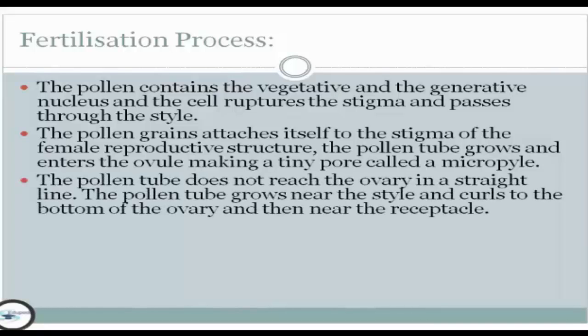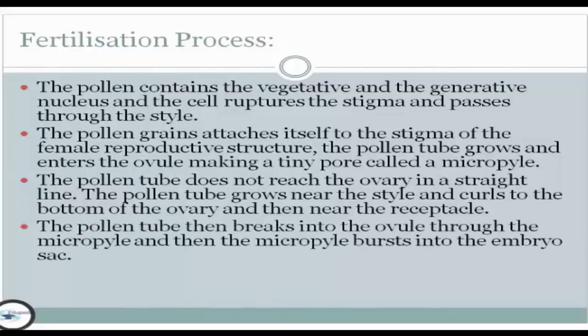The pollen tube does not reach the ovary in a straight line. It grows near the style and curls to the bottom of the ovary and then near the receptacle. The pollen tube then breaks into the ovule through the micropyle and bursts into the embryo sac.